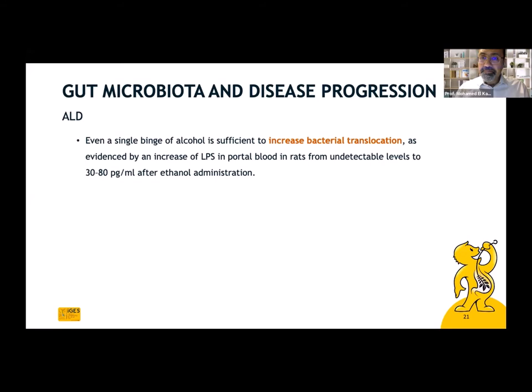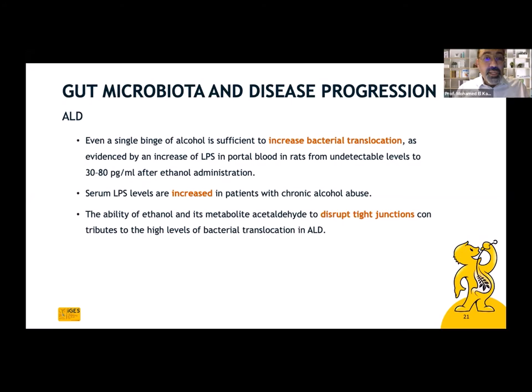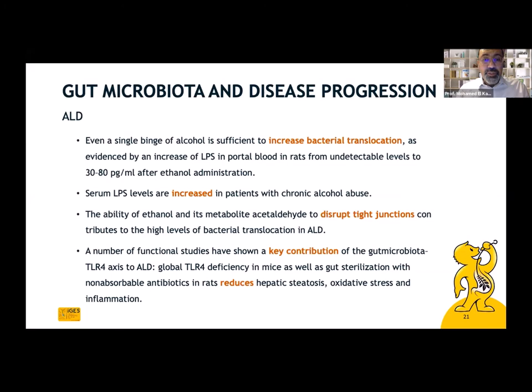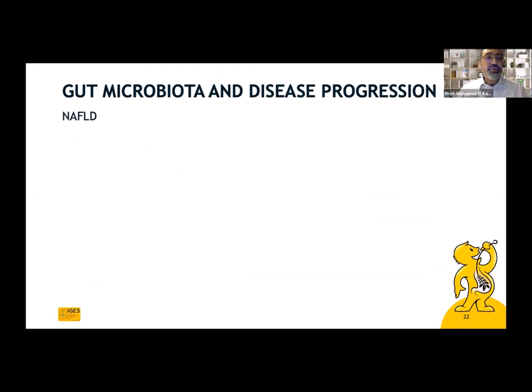Serum lipopolysaccharide is also increased in patients with chronic alcohol use. The ability of ethanol and its metabolite acetaldehyde to disrupt tight junctions contributes to a high level of bacterial translocation in patients with alcoholic liver disease. A large number of studies have shown a key contribution of gut microbiota via the TLR4 axis to alcoholic liver disease. Global TLR4 deficiency in mice, as well as gut sterilization with non-absorbable antibiotics in rats, reduces hepatic steatosis, oxidative stress, and inflammation.